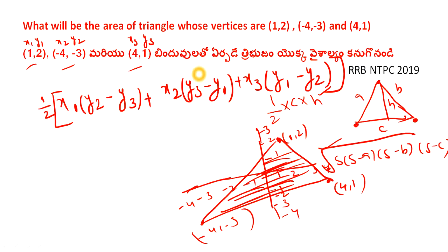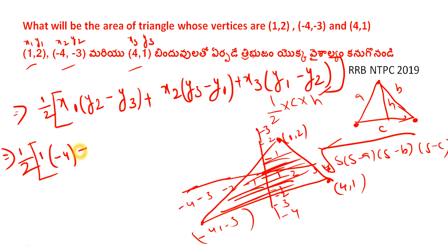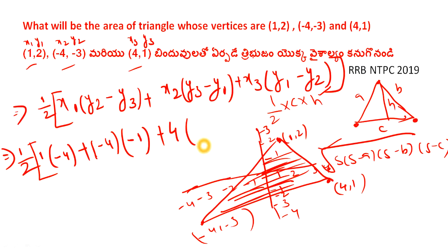So this formula is clear. x1 is given. Now y2 minus y3, then x2 into (y3 minus y1), then x3 into (y1 minus y2). We substitute: 2 minus into minus 3, and plus 3.